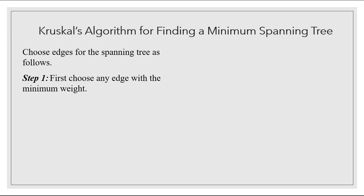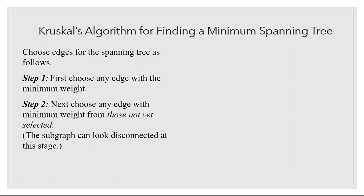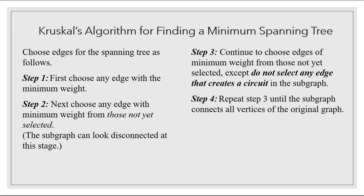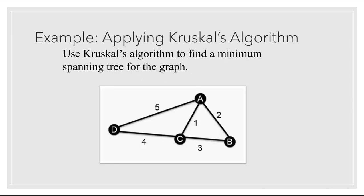The steps are: first, choose any edge with the minimum weight out of all the edges on the graph. Next, choose any edge with the minimum weight from those you haven't selected — it's possible the two edges aren't connected yet, but by the end we'll have a connected graph. Step three is to continue choosing edges of minimum weight from those not yet selected, but don't select any edge that would create a circuit, because trees don't have circuits. Repeat step three until the subgraph connects all vertices of the original graph.